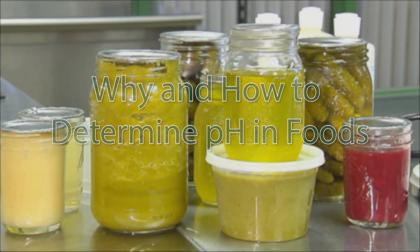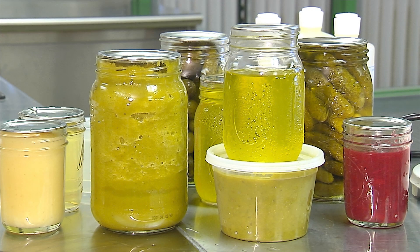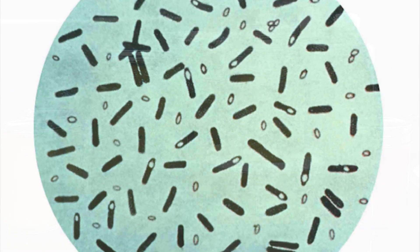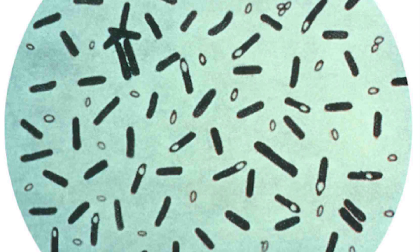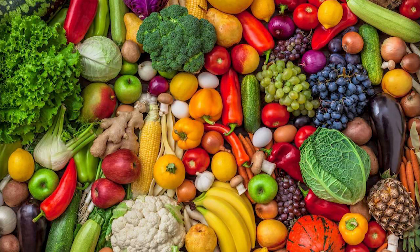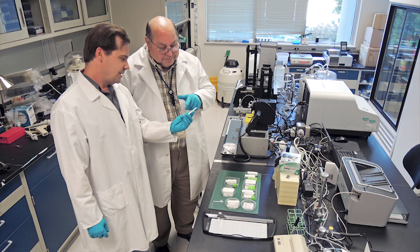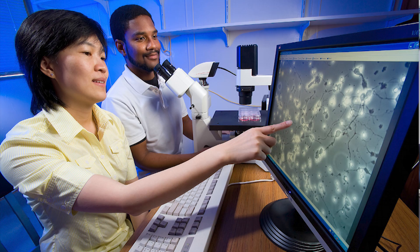Ensuring that canned food is the correct pH level is critical for preventing the growth of Clostridium botulinum spores. Spores are inactive forms of bacteria that can be found on the surfaces of fruits and vegetables. In the right conditions, spores can produce a toxin or poison. Botulism is the potentially fatal disease associated with food contaminated with the toxin.